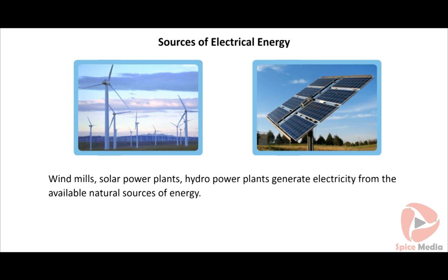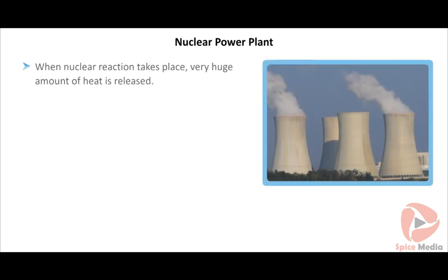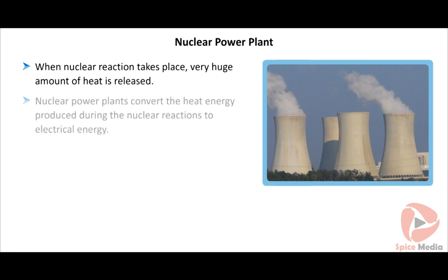Solar power plants use the energy from the sun to produce electrical energy. In hydropower plants, the mechanical energy of flowing water is used to rotate the turbine of a generator and produce electricity. When nuclear reaction takes place, a very huge amount of heat is released. Nuclear power plants convert the heat energy produced during nuclear reactions to electrical energy.